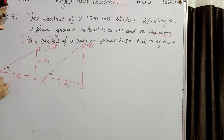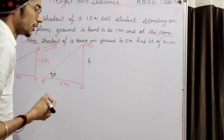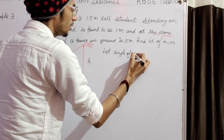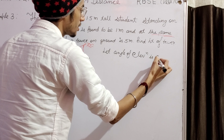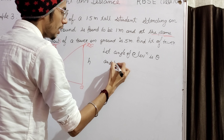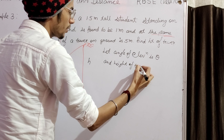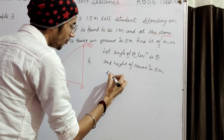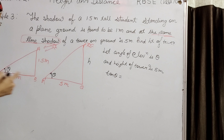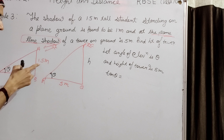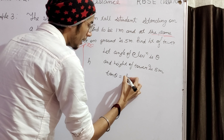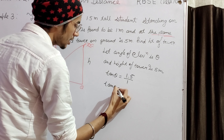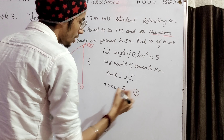Let the angle of elevation be theta and let the height of tower be H. From figure 1, tan theta equals perpendicular upon base, which is 1.5 divided by 1. So tan theta equals 3 by 2. This is equation number 1. The height of tower H is what we need to find.